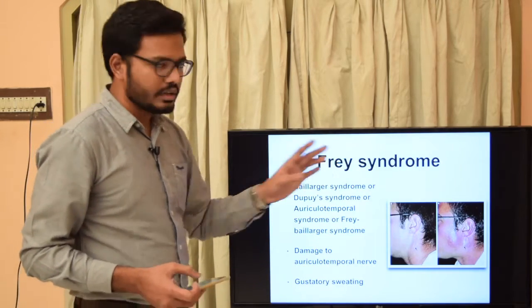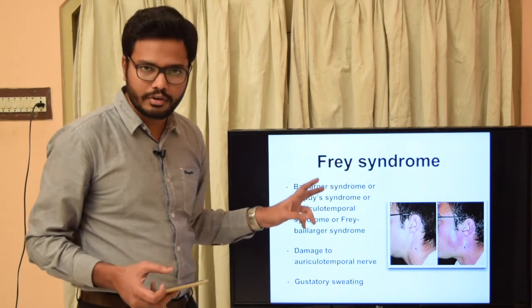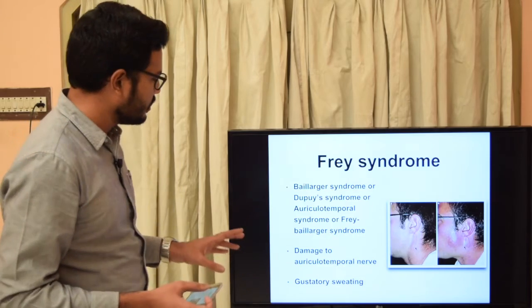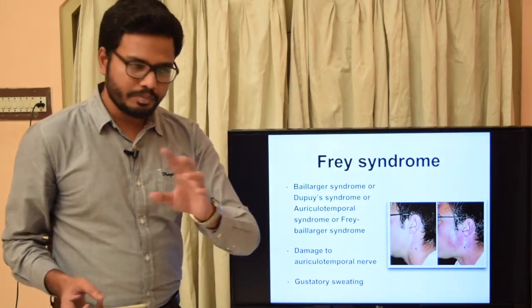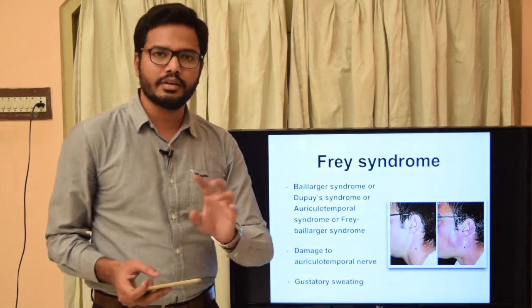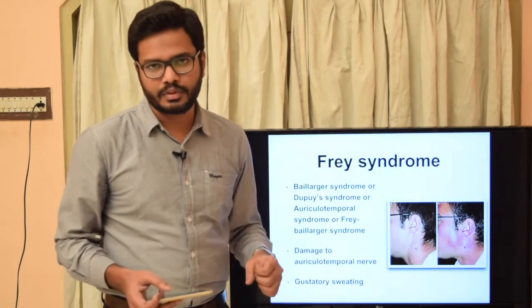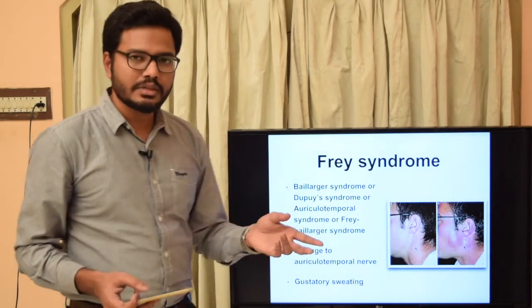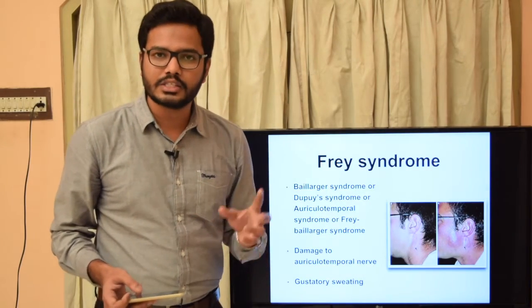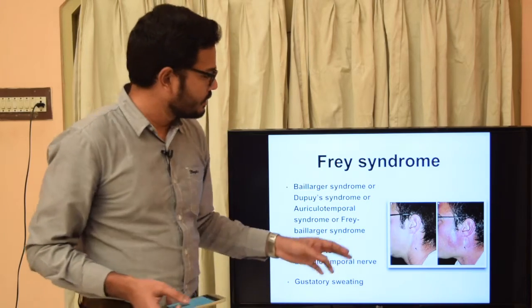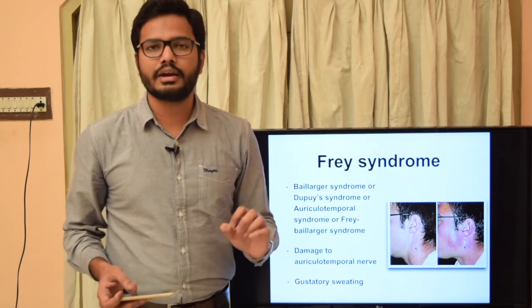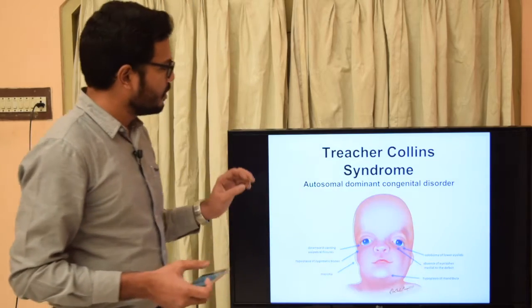Frey syndrome is also called Baillarger syndrome, Dupuy syndrome, auriculotemporal syndrome, or Frey-Baillarger syndrome. There is gustatory sweating in patients suffering from this syndrome because of damage to the auriculotemporal nerve. When there is surgery near the parotid gland, there can be damage to the auriculotemporal nerve, which normally supplies parasympathetic fibers to sweat glands of the scalp and the parotid gland. Because of this damage, the nerve switches function and instead of stimulating the parotid gland, it stimulates cutaneous sweat glands, causing redness and sweating when thinking of food — this is called gustatory sweating.